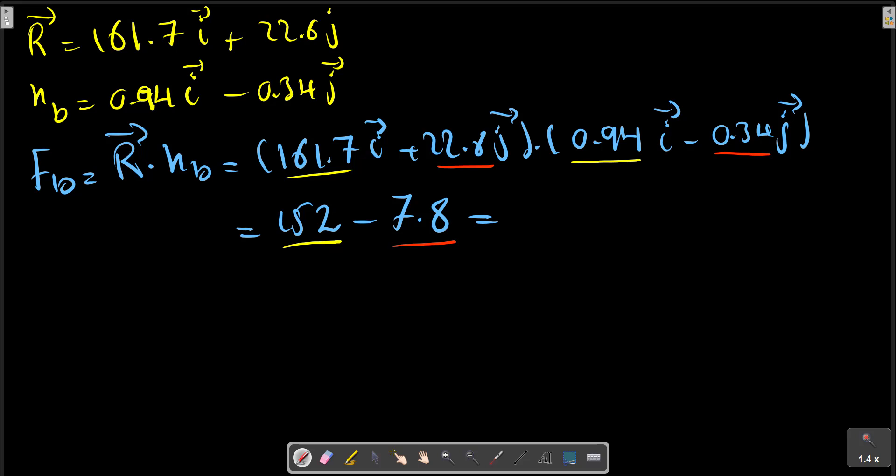Now we can obtain the result. FB equals the projection of R on the B direction.